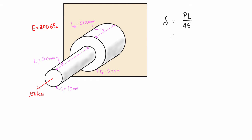When we have multiple cross-sections, or if we have anything changing throughout the length of the rod — like an applied force somewhere along the surface or halfway through — any time there's a change, we just treat it as a new section. We solve this problem by parts, where the total deformation equals the sum of each part: PᵢLᵢ over AᵢEᵢ.